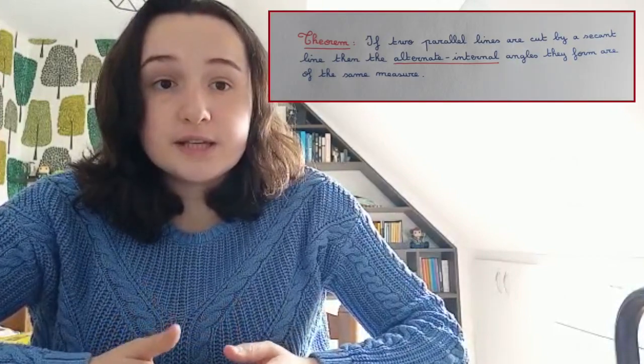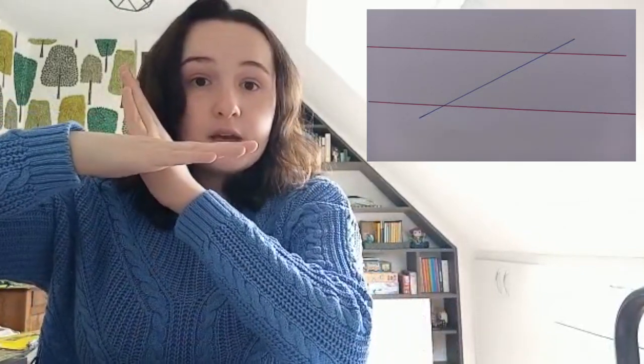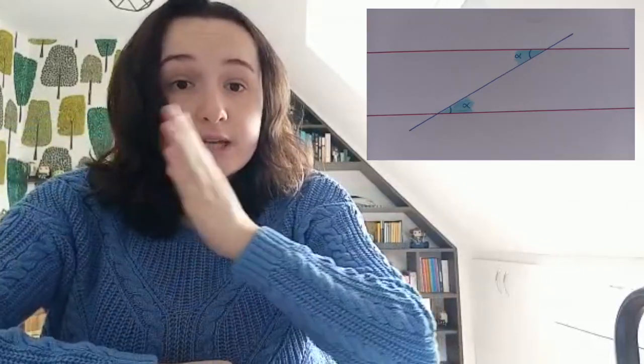As Aristotle had validated the idea of a spherical Earth, Eratosthenes could use his observations to estimate the circumference of the entire planet. To find the circumference of the Earth, Eratosthenes applied the following theorem: if two parallel lines are cut by a second line, then the alternate interior angles they form are of the same measure. When a straight line cuts two parallel lines, the angles formed between those parallel lines on both sides of the second line are equal. That is an important mathematical theorem to understand how Eratosthenes found the circumference of the Earth.